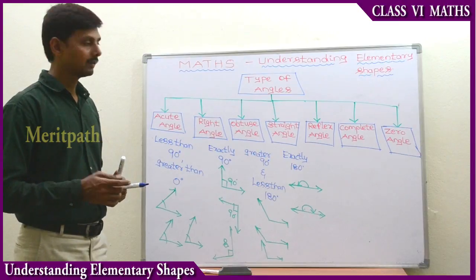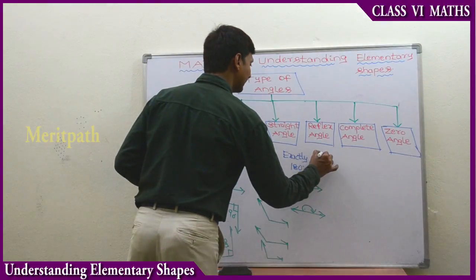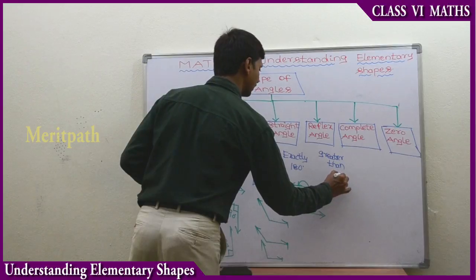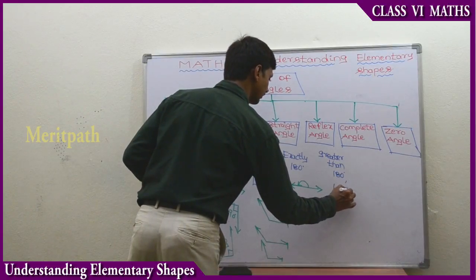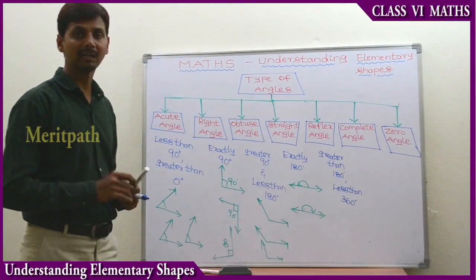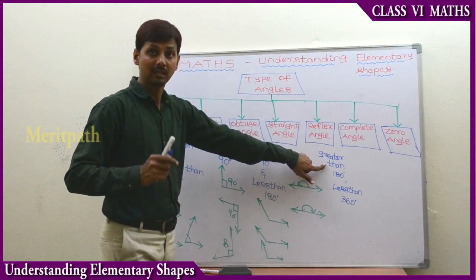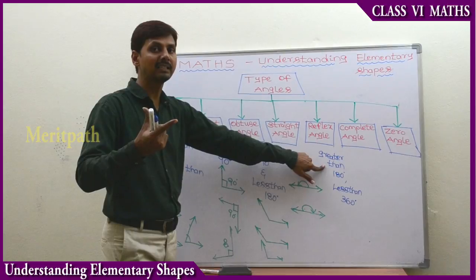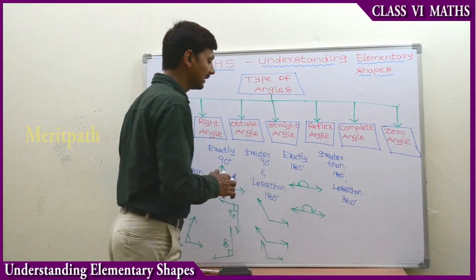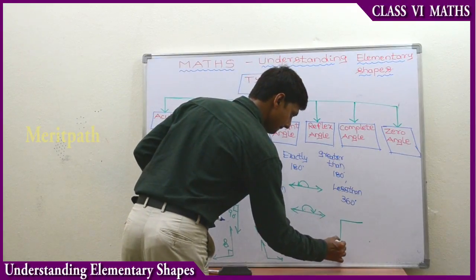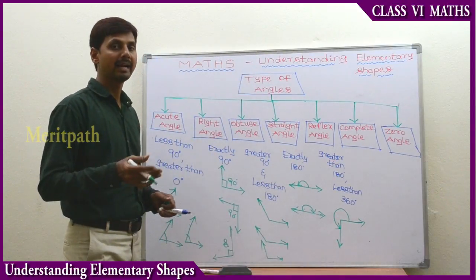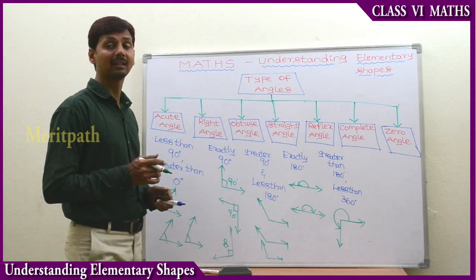Let us go to the reflex angle. The angle which measures greater than 180 degrees and less than 360 degrees - we call those angles reflex angles. The angle which measures greater than 180 degrees and less than 360 degrees is called a reflex angle. This angle is measuring more than 180 degrees but less than 360 degrees, so this angle is a reflex angle.